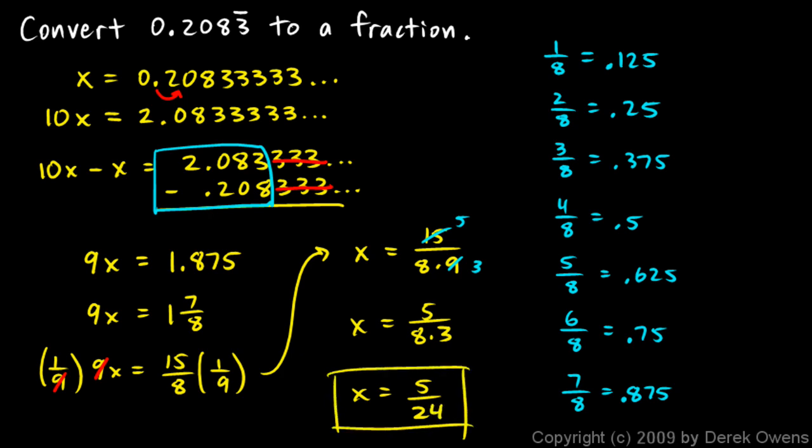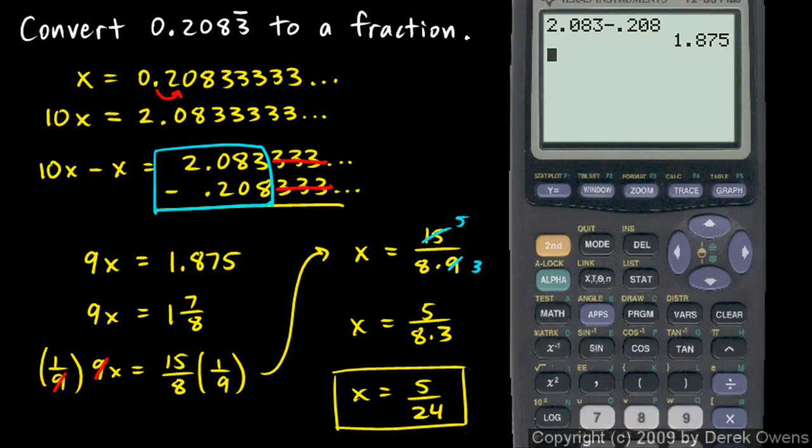And we can check this just by pulling the calculator back up and typing in 5 divided by 24. And it should be 0.2083 repeating. So 5 divided by 24. And hit enter. And there it is, 0.20833333 to as many places as the calculator can display it.